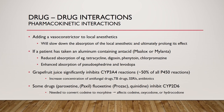Grapefruit juice significantly inhibits CYP3A4 reactions — the enzyme responsible for almost 50% of all drug metabolism by the liver. This increases the concentration of drugs such as antifungal drugs, TB drugs, SSRIs, and some antibiotics. Other drugs — Paxil, Prozac, and Quinidine — inhibit another enzyme, CYP2D6, which is necessary to convert codeine to morphine. Therefore, when CYP2D6 is inhibited, codeine, oxycodone, and hydrocodone will not have their intended effect.